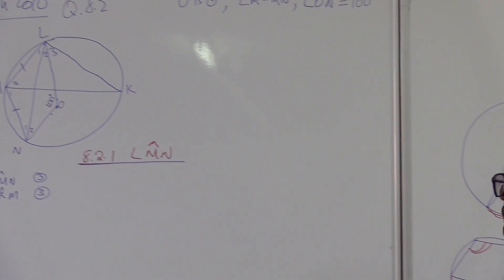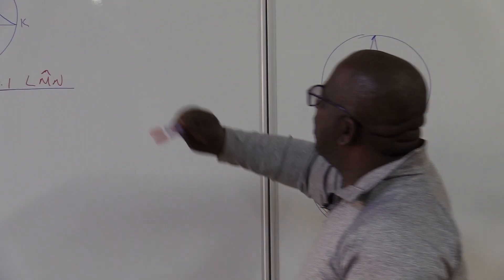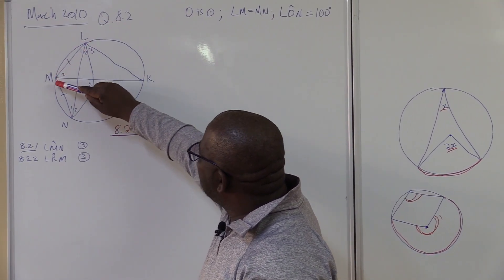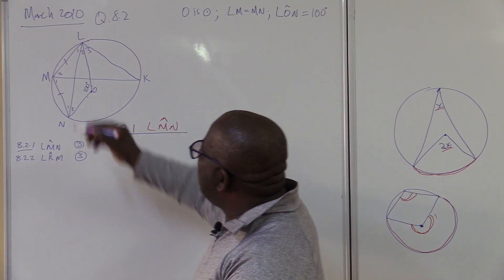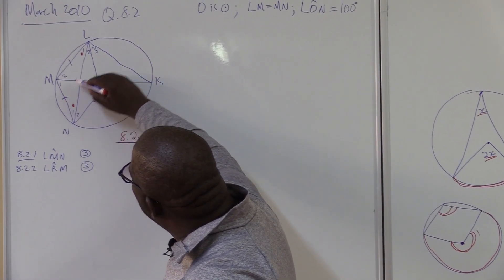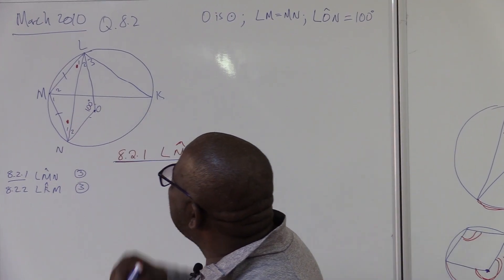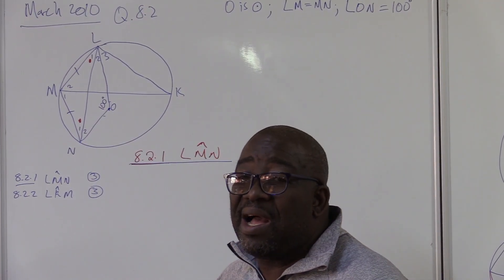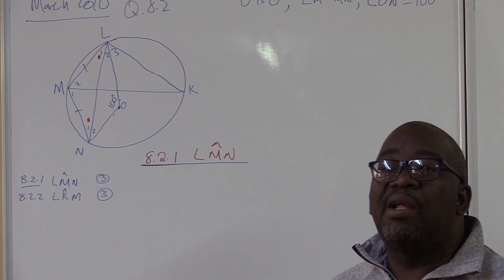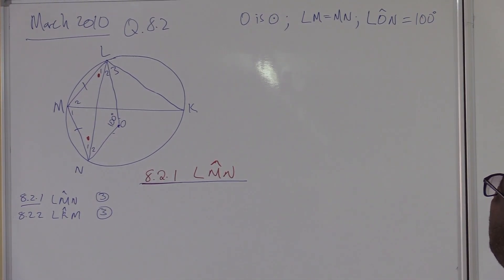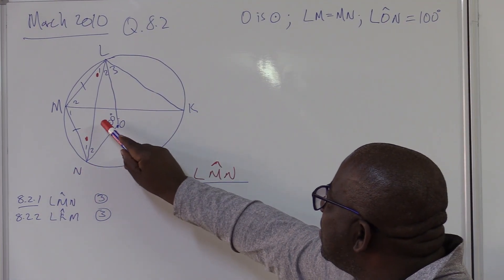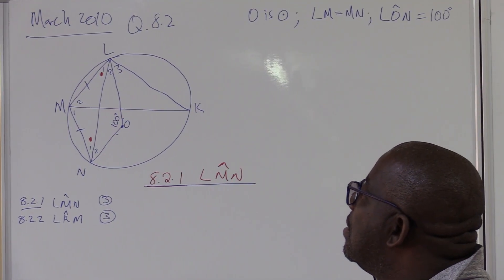I can see the center theorem here already. LM is equal to MN — we're given that. Remember, if this line is equal to that one, then this angle here will be equal to this angle here, because angles opposite equal sides are also equal. So the angles marked with dots are the same. We're also given that angle LON is 100 degrees.